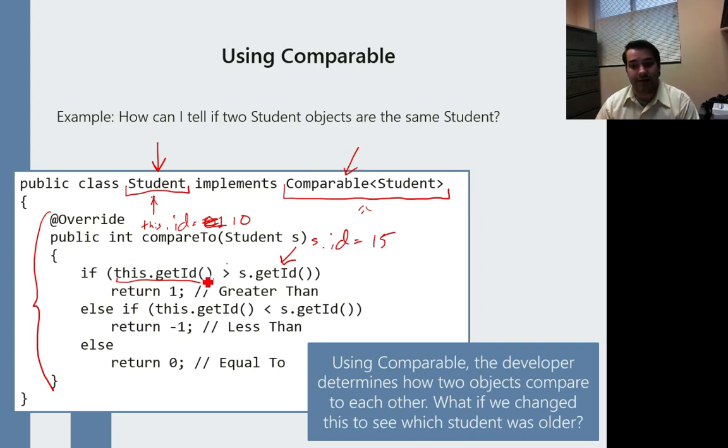Does this ID, is this ID greater than 15? No. So I skip it, false. Is it less than? In our case, yes. 10 is less than 15, so I would return negative one.